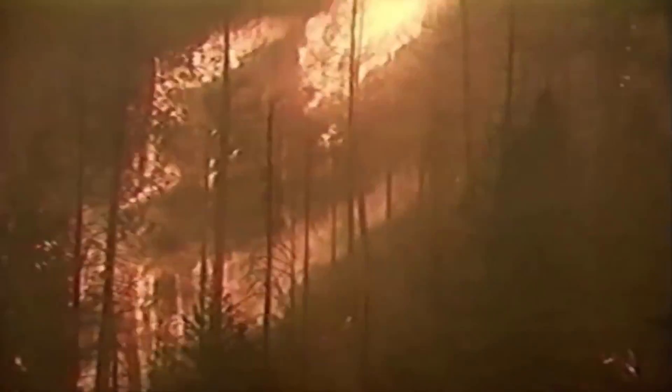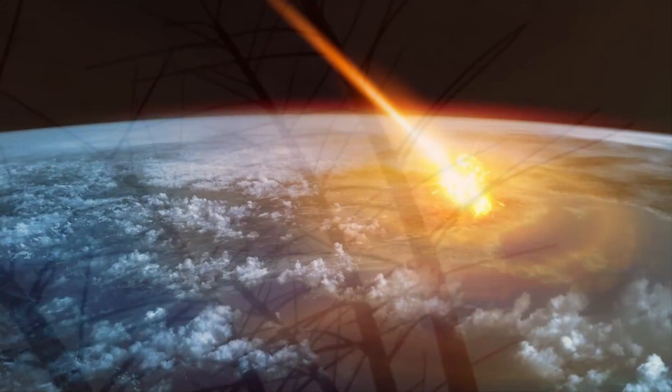The force produced by the Tunguska explosion leveled 80 million trees over a distance of 2,000 square kilometers, and shattered the windows of cities that are several hundred kilometers away. The meteorite was expected to be about 50 to 190 meters across in diameter.